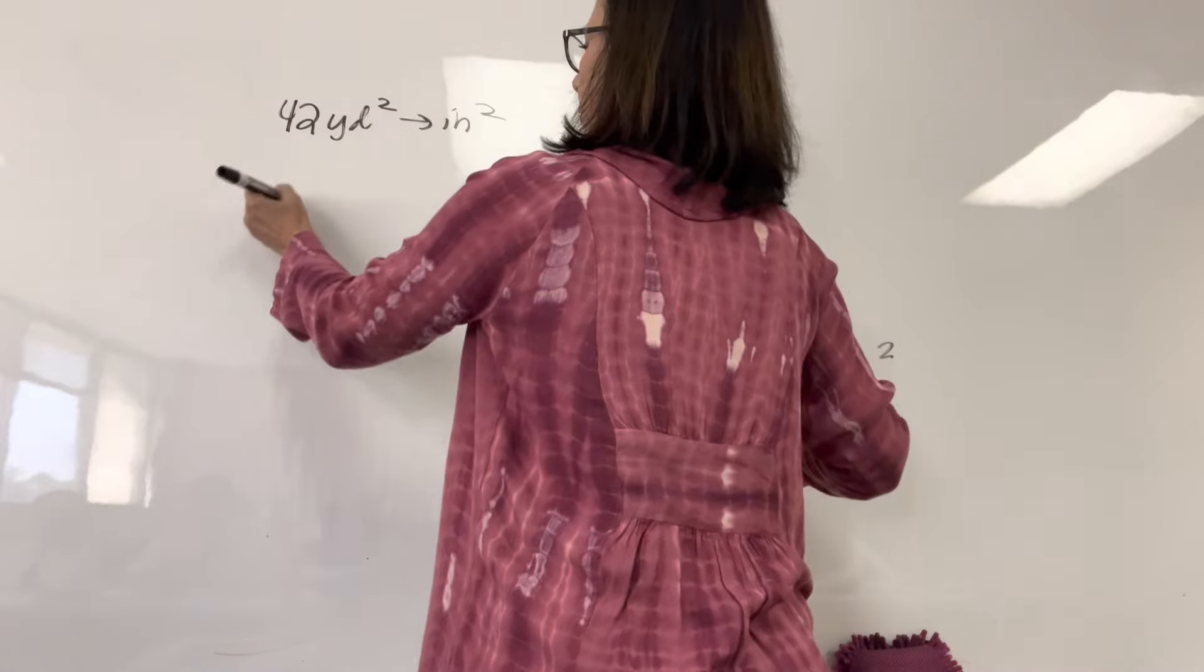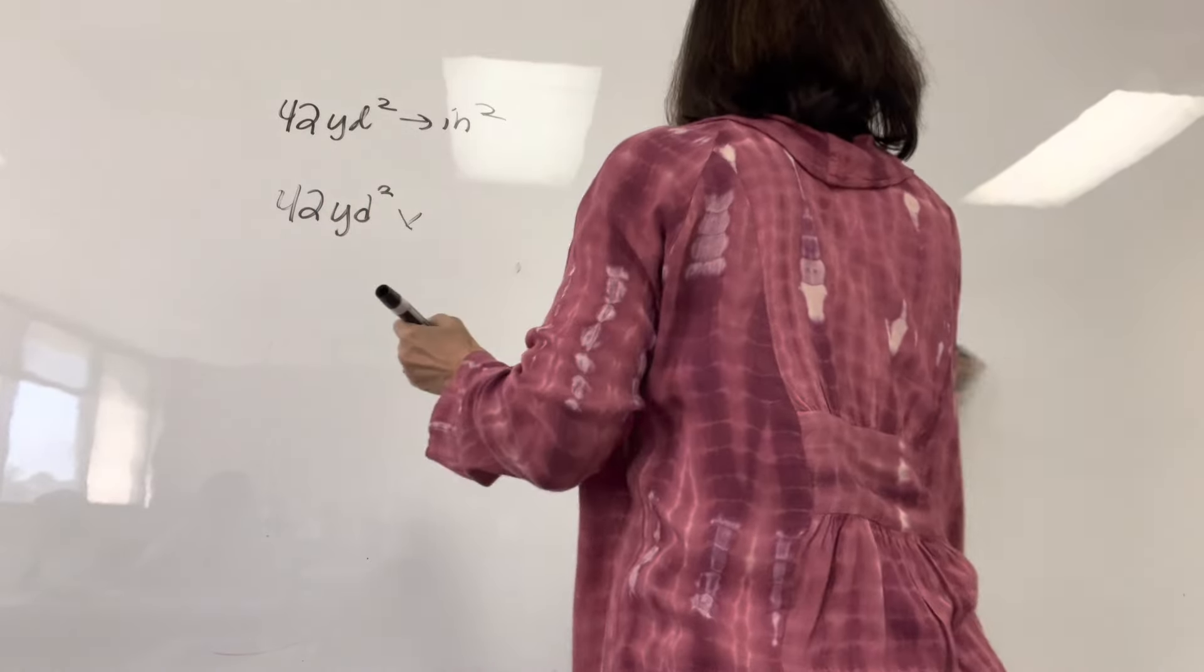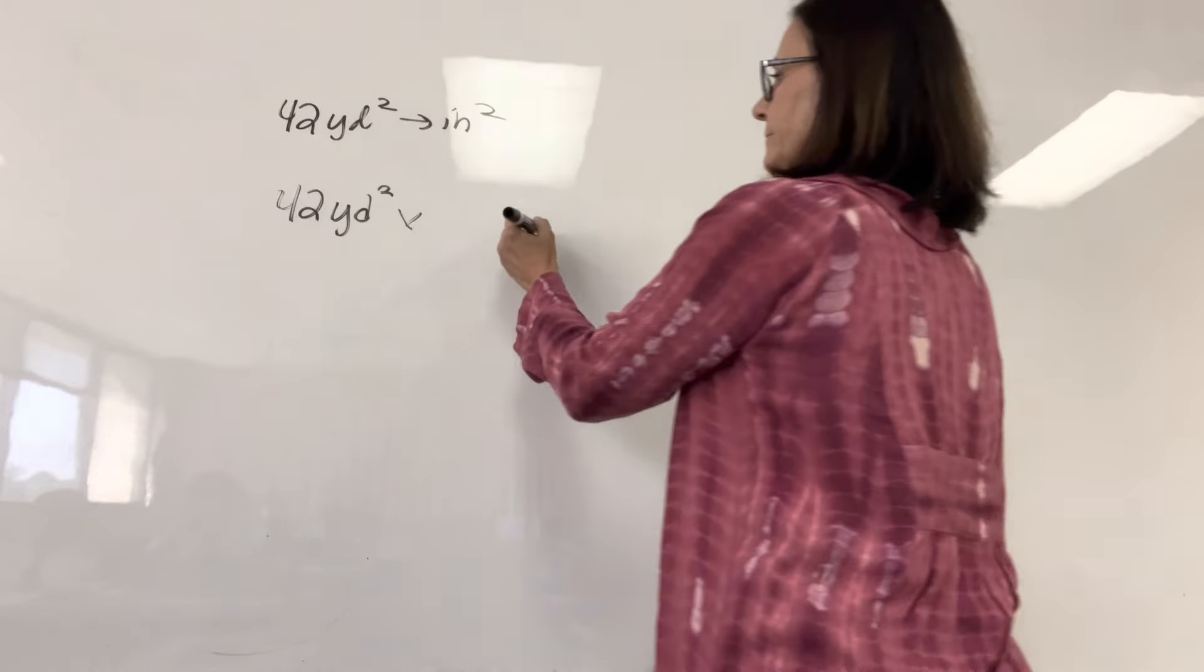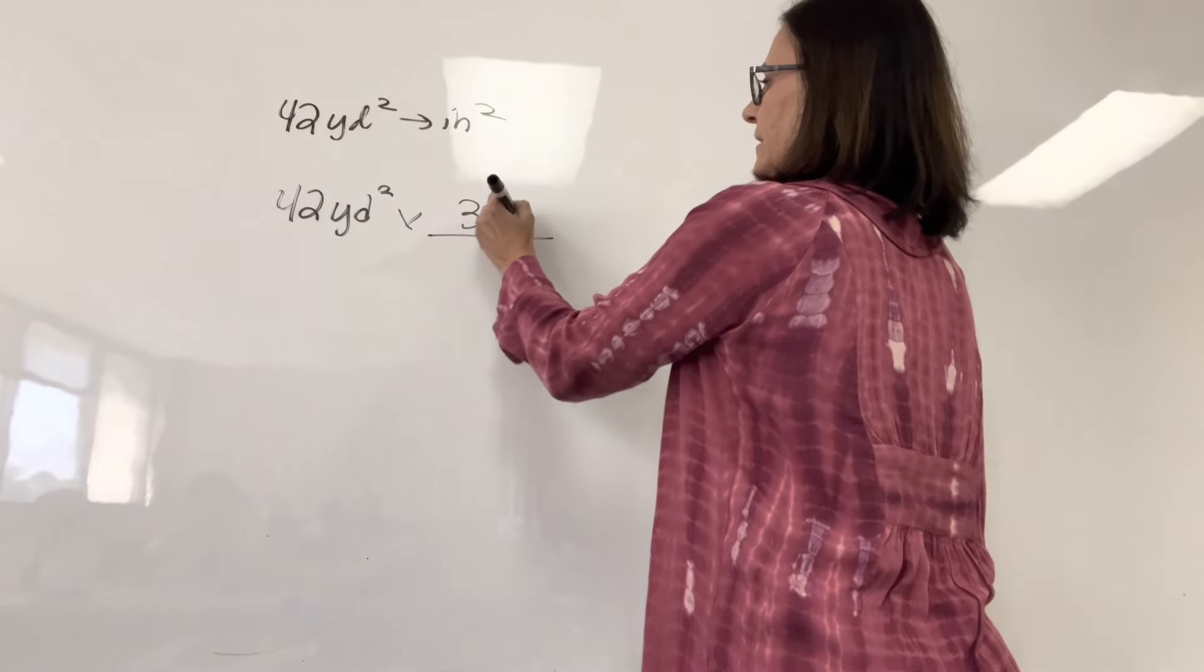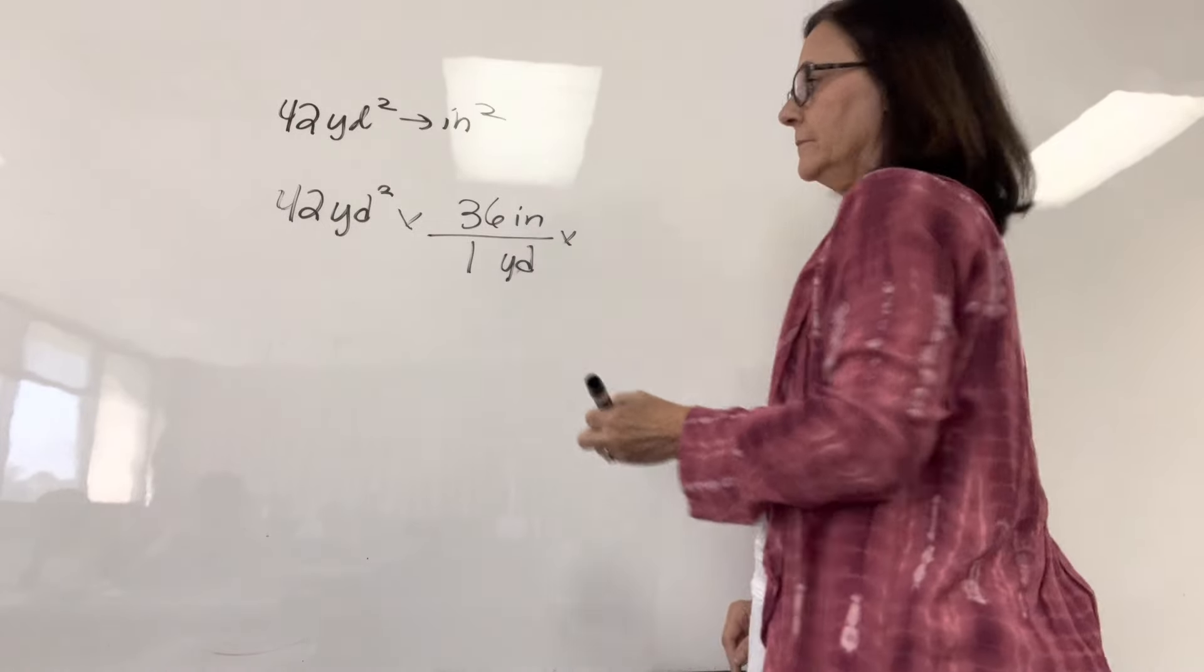All right. If I begin with 42 yards squared, what are my, what's my unit multiplier going to be? 36 inches to one yard, but I need two of them, right?